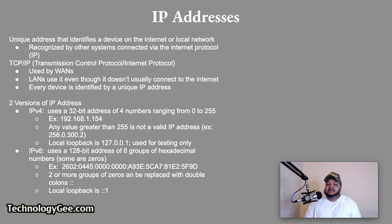An IP address is a unique address that identifies a device on the Internet or local network. It allows a system to be recognized by other systems connected via the Internet protocol. The type of networking used for WANs such as the Internet is called Transmission Control Protocol / Internet Protocol, more commonly referred to as TCP/IP. TCP/IP networking is also used for LANs. Every device on a TCP/IP network is identified by a unique IP address.